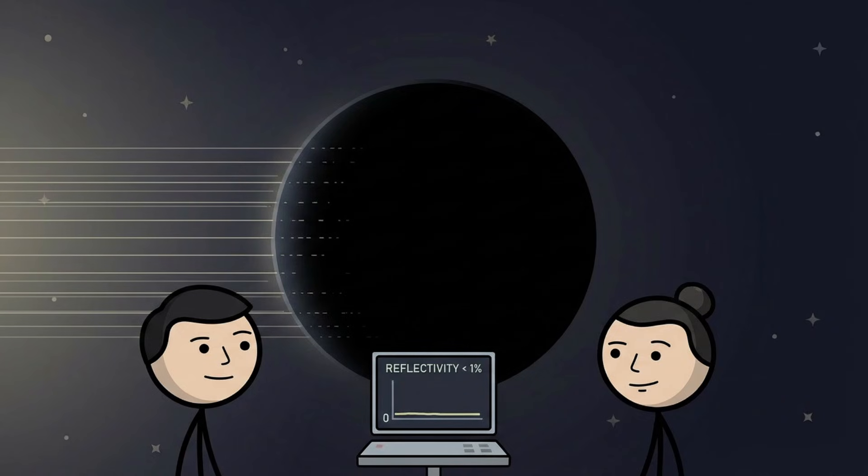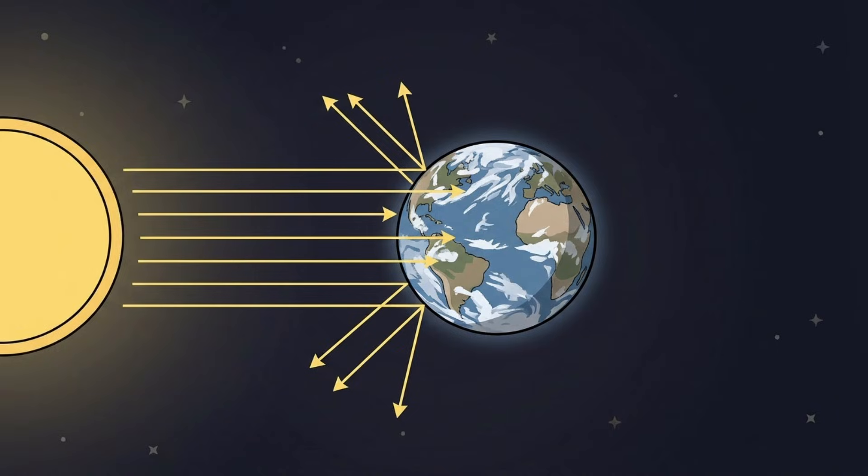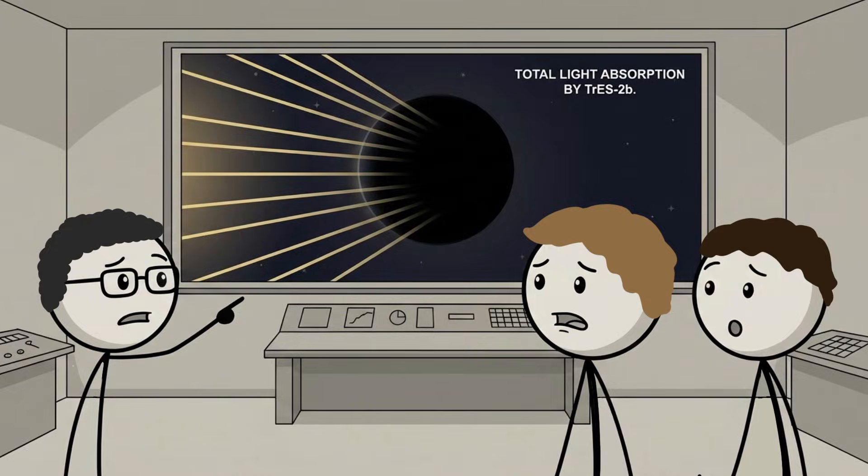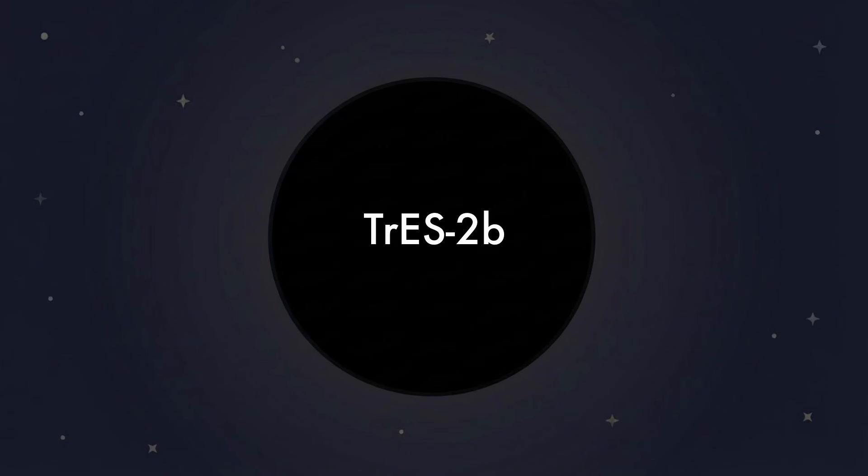TRES-2b reflects less than 1% of the light that reaches it. Earth reflects about 30%. Even charcoal reflects more. This planet absorbs almost everything, making it the darkest known exoplanet ever measured. Against the black background of space, it does not stand out. It nearly disappears.